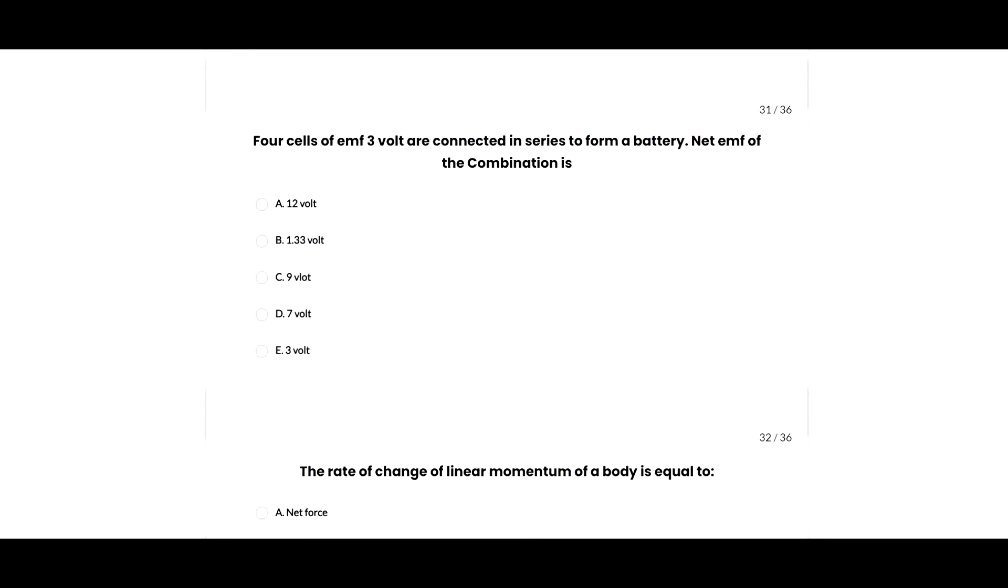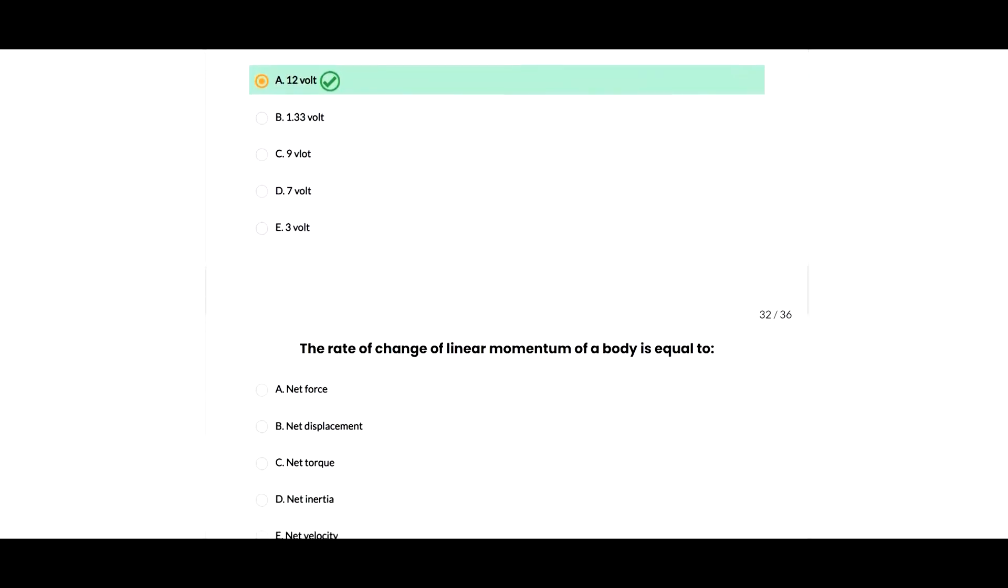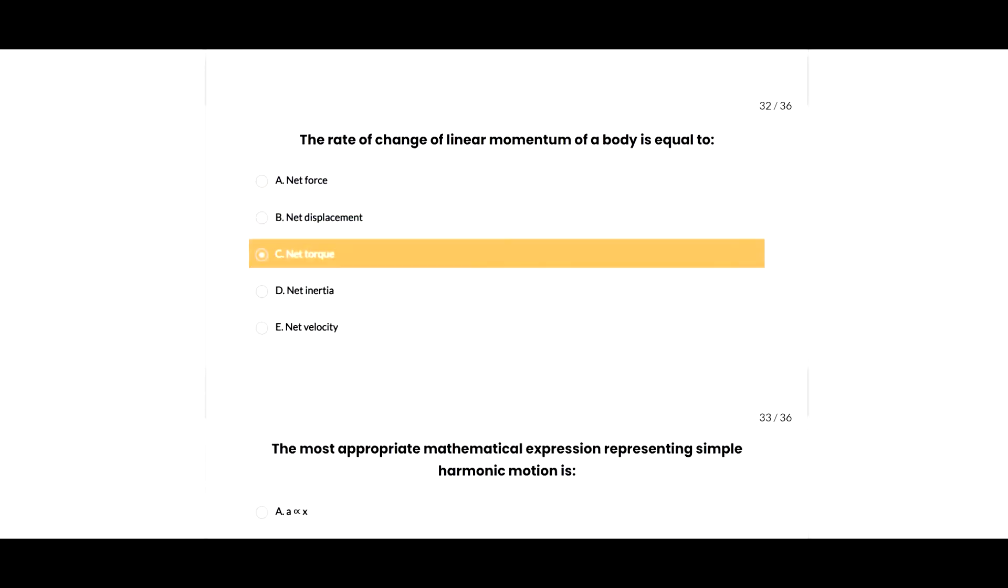Next question: four cells of EMF 3 volts are connected in series to form a battery. The net EMF of the combination is 12 volts, so A option is correct. Next question: the rate of change of linear momentum of a body is equal to net force, so A option is correct.